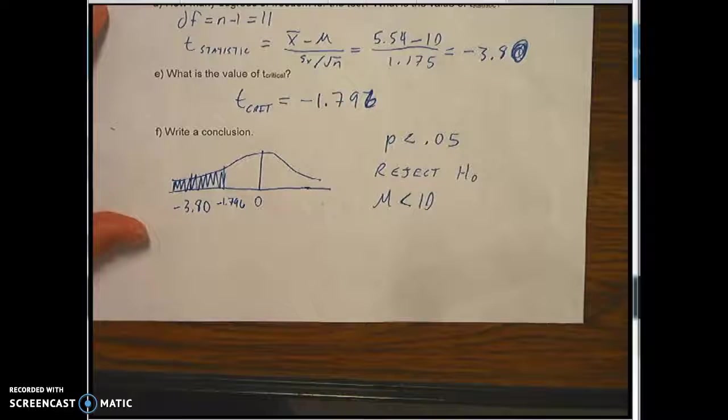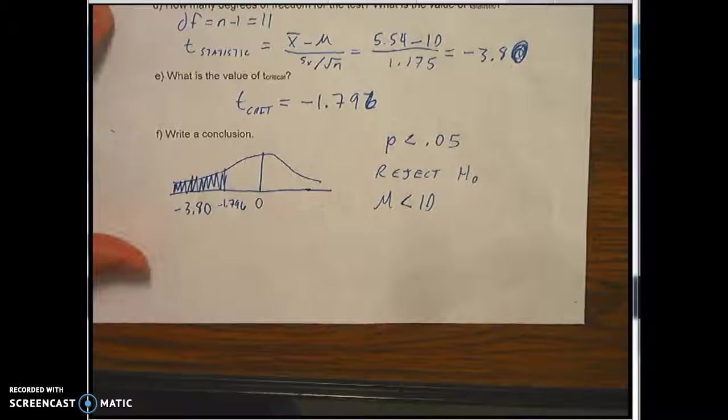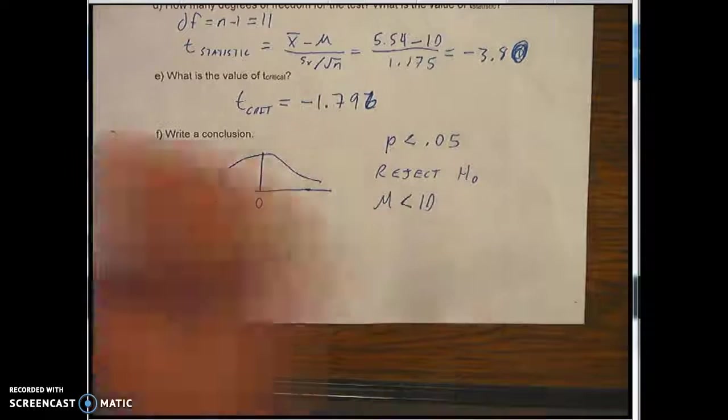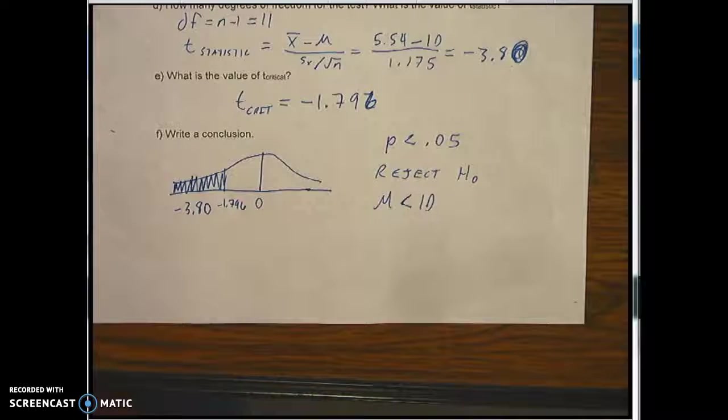Our sample size was 12. Since we had a small sample size, we have to assume that the population of Stony Point students is normally distributed. That's one of the assumptions of the t-test.